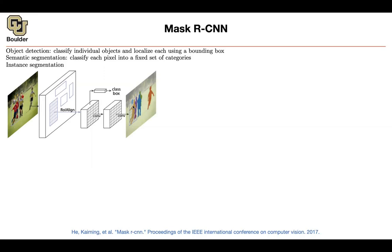You're going to put a multitask loss on each one of these sampled regions of interest. Your region of interest is here and you're going to have a multitask loss. We know how to handle the classification — that's going to be Faster R-CNN — and the bounding boxes, so we solved this problem. Now, what is the loss of the mask?